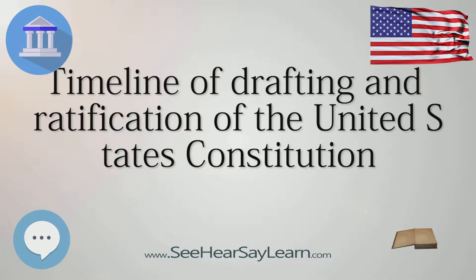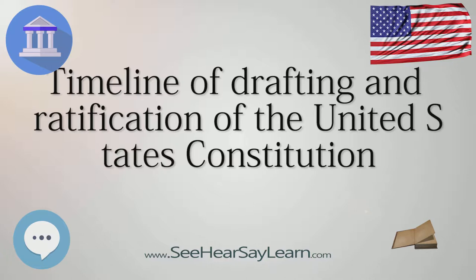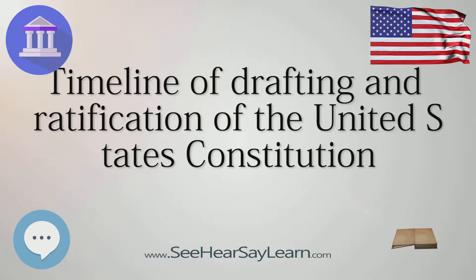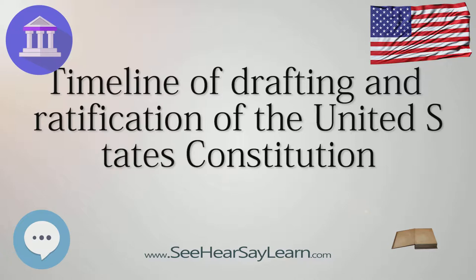May 25: Constitutional Convention Convenes. As enough delegates have arrived to constitute a quorum, the convention is called to order and delegates begin their work. George Washington is elected president of the convention. William Jackson is selected as secretary. Alexander Hamilton, Charles Pinckney, and George Wythe are chosen to prepare rules for the convention.